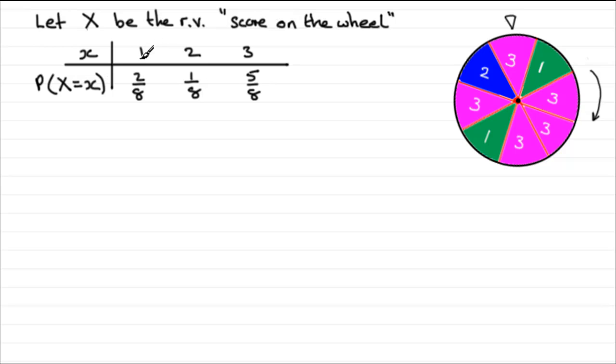The probability that the score on the wheel was any of the observed values is listed here. So to get a score of 1, as you can see we had a couple of 1's here, so it was 2 out of 8. Similar results for getting the 2 and the 3.